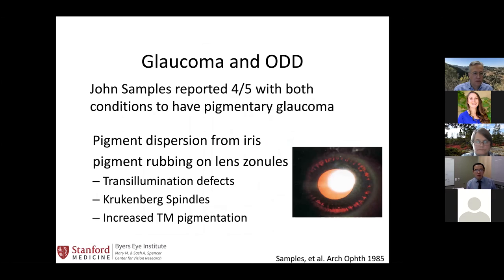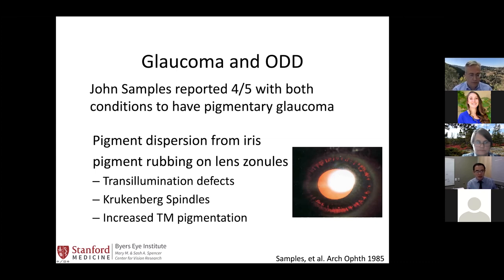What is the relationship between glaucoma and ODD? This is a topic that's been published by only a few groups. Looking into the ophthalmic literature, one of the early papers published by John Samples in 1985 showed five patients who had pigmentary glaucoma and also had ODD. Pigment dispersion glaucoma is a subtype where iris pigment rubs off the lens. In the image, you can see a translumination defect diagnostic for pigment dispersion, along with Krukenberg spindles on the back of the cornea and increased TM pigmentation in the more affected eye.